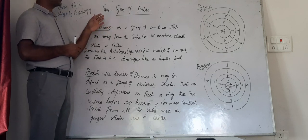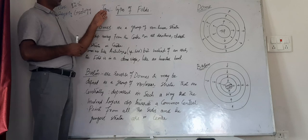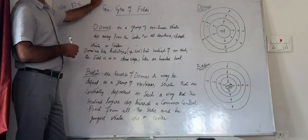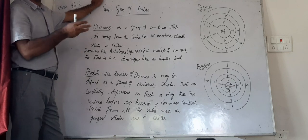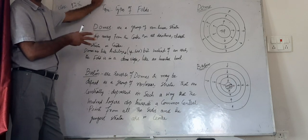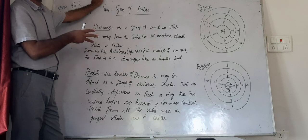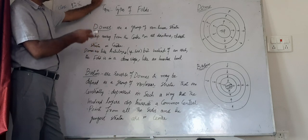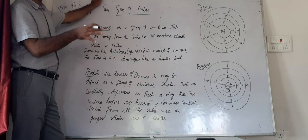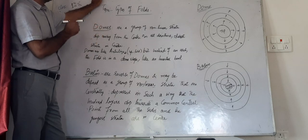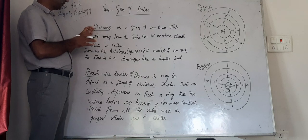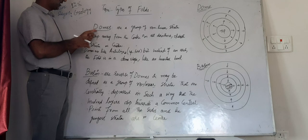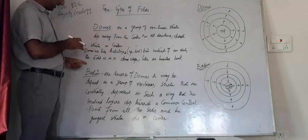This includes anticlinorium and synclinorium type of folds. We have also learned about symmetrical and asymmetrical type of folds, and overturned type of folds. Now in this class we will try to understand other two types of folds: domes and basins.